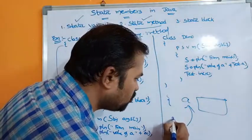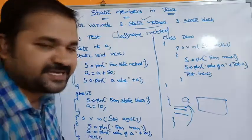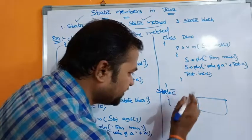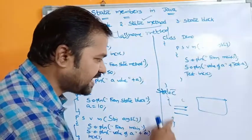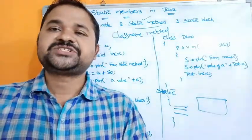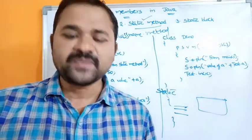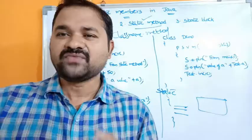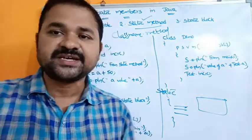Now let's see about static block. A block means a collection of statements enclosed in curly braces. A static block starts with the keyword static followed by curly braces containing a set of statements. Static block is mainly useful in order to initialize static variables. We can also write database connection code for JDBC in a static block.